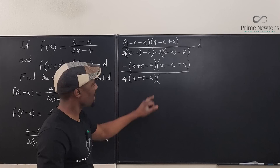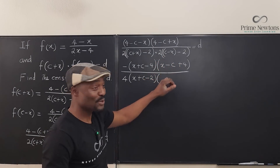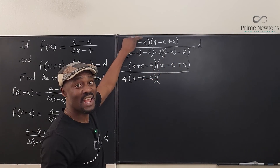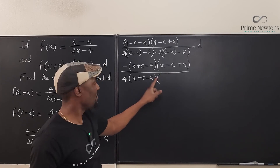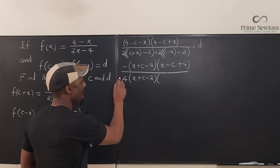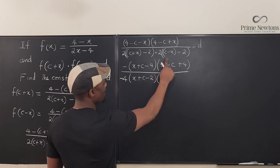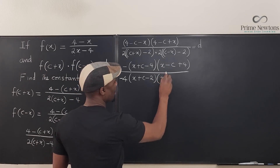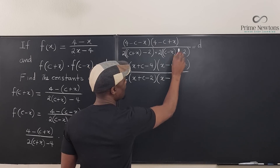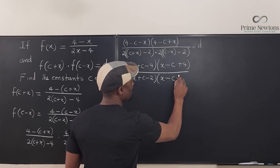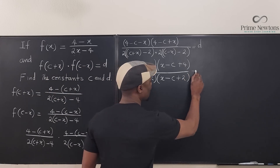For the bottom, I want the x to be positive too. I do the same sign-flip trick — pulling the negative to the back — so the second denominator factor becomes (x minus c plus 2). The two negatives cancel each other, and everything equals d.